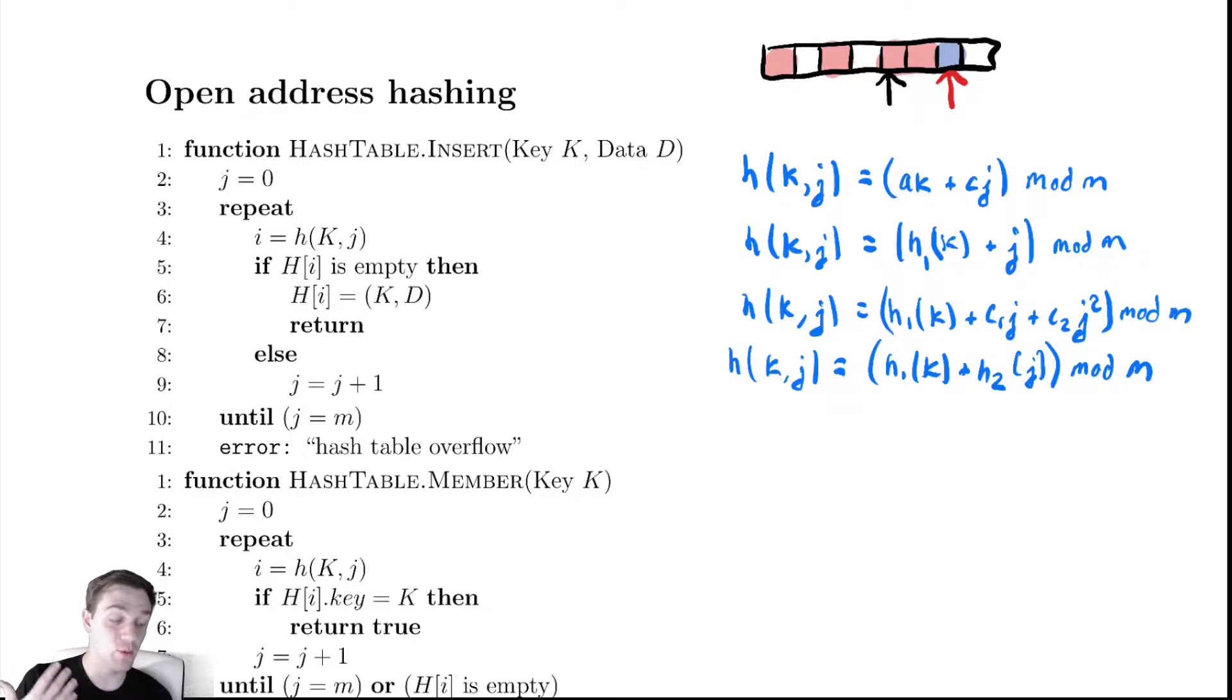With that in mind, our natural question is what's the expected number of collisions? The expected number is how many times h[i] is not empty on that line. Let's try to analyze that. We'll begin by defining some variables.